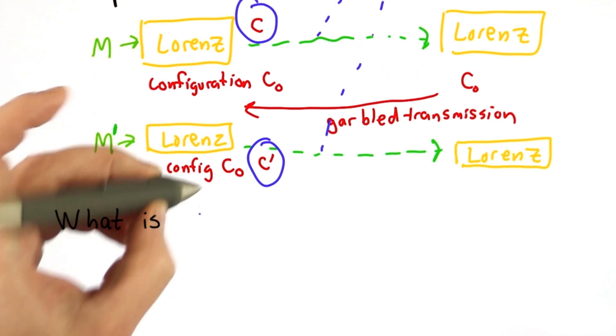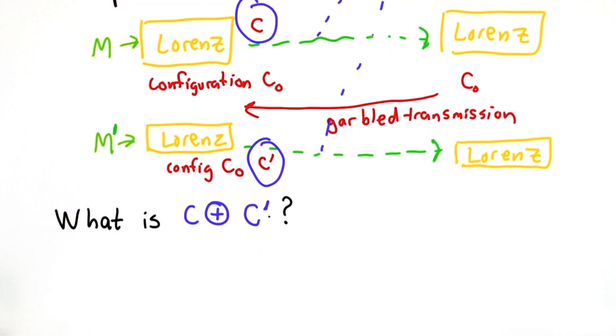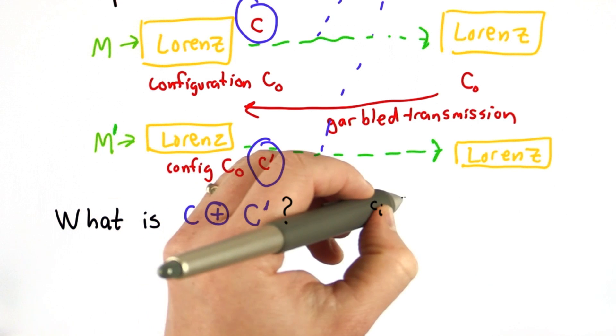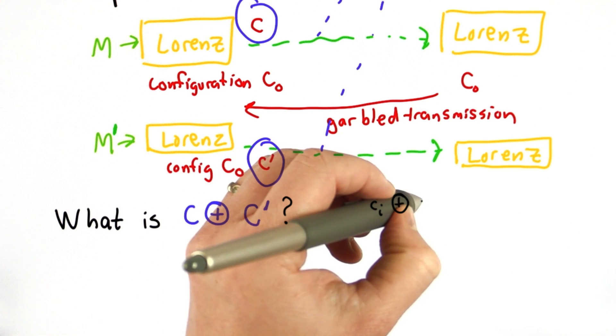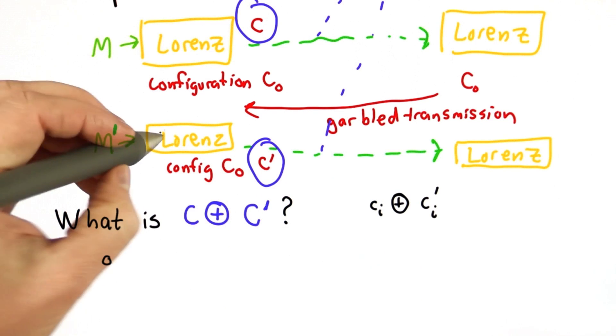So what is the result of XORing these two messages? That means for each bit, we're going to go through the bits of the messages, XORing each bit. I want to introduce a new variable here.